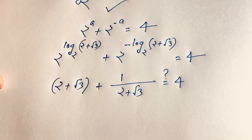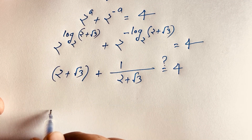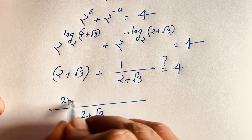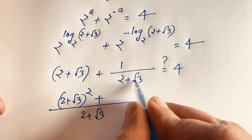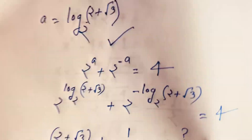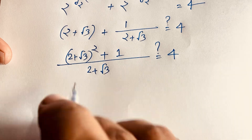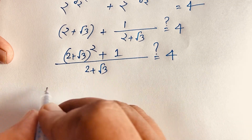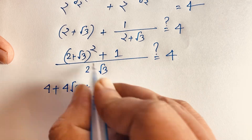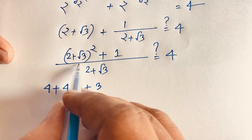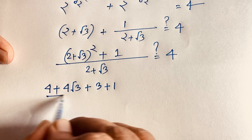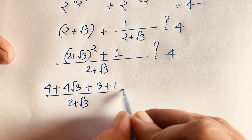Finding the common denominator, we get [(2 + √3)² + 1] / (2 + √3). Expanding (2 + √3)² gives 4 + 4√3 + 3 = 7 + 4√3. Adding 1 gives 8 + 4√3. So the expression becomes (8 + 4√3) / (2 + √3). Factoring out 4 from the numerator: 4(2 + √3) / (2 + √3).